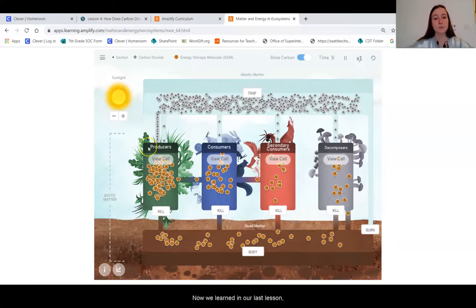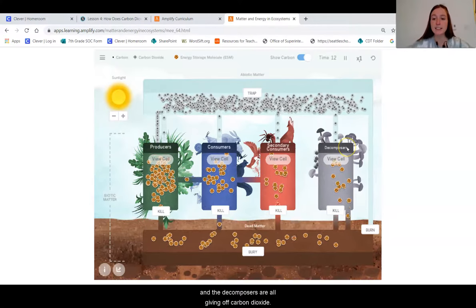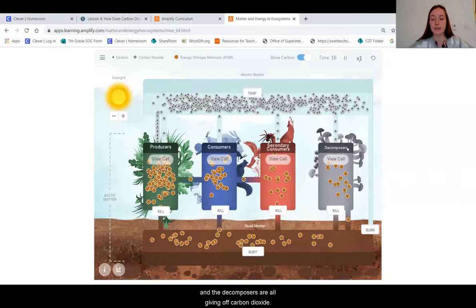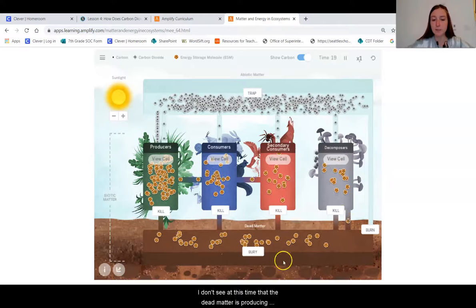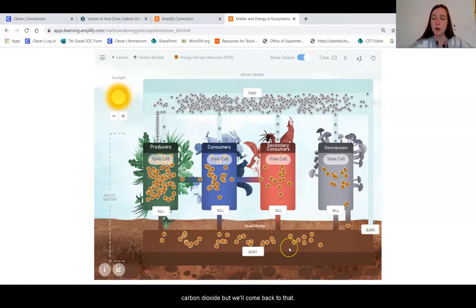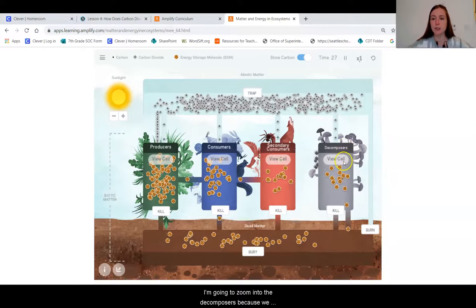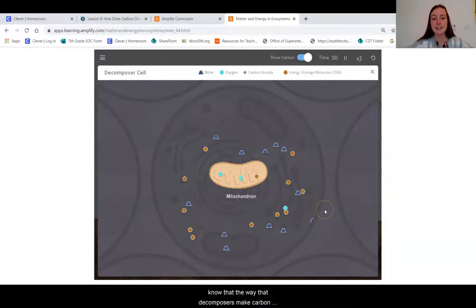Now, we learned in our last lesson that producers, consumers, and decomposers are all giving off carbon dioxide. I don't see at this time that the dead matter is producing carbon dioxide, but we'll come back to that. I'm going to zoom into the decomposers because we know that the way that decomposers make carbon dioxide is through a process called cellular respiration. Now, if we're watching here, it looks like I see oxygen and energy storage molecules coming in from the outside. And if I pause it for just a moment, I just saw that carbon dioxide and water are being released.